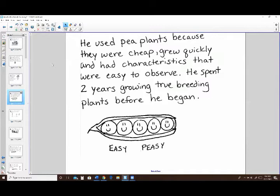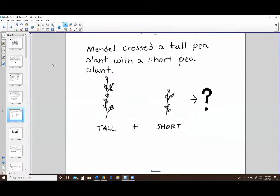So he spent two years of his life growing these pea plants until the pea plants produced only the trait he was looking for. So for example, like it only produced green peas every generation. And then what he did is he would cross them. So he would basically mate two plants together by pollinating one with the other's pollen. So he crossed a tall and a short pea plant together.